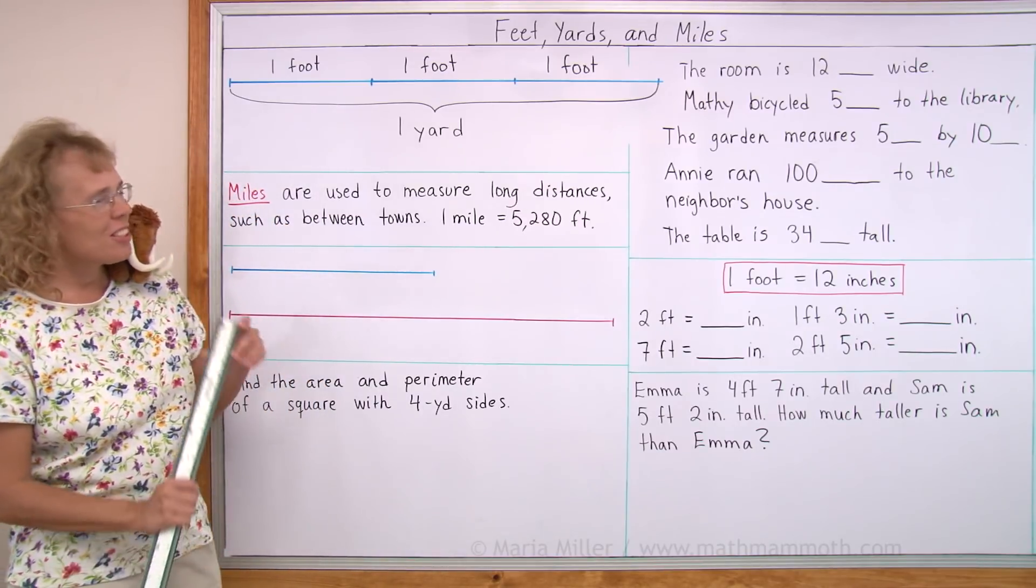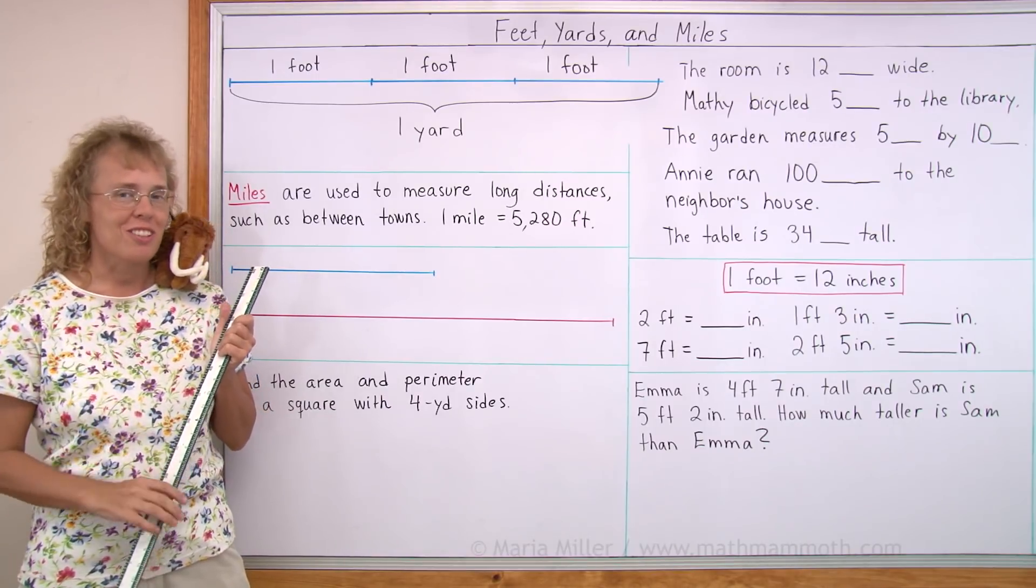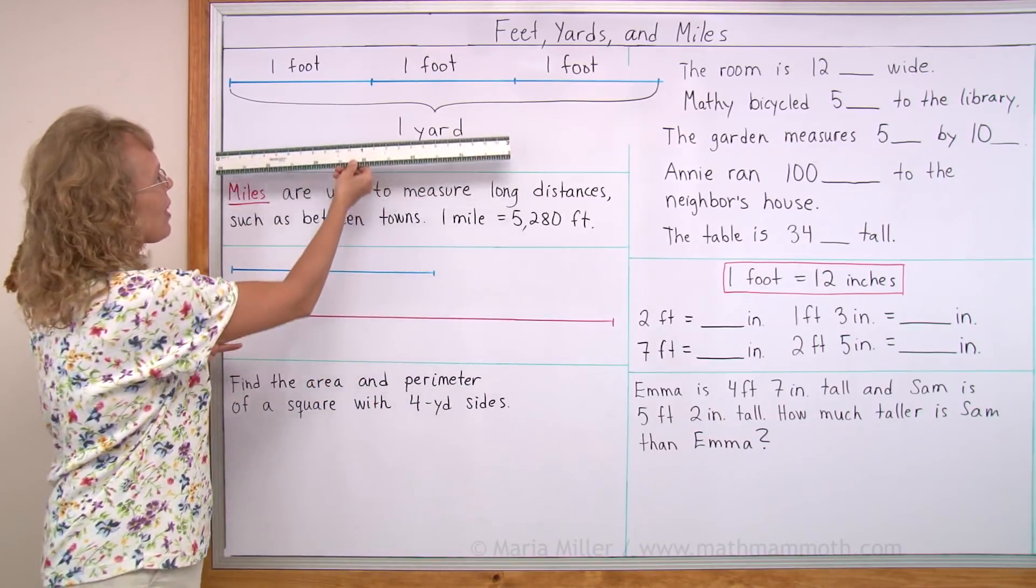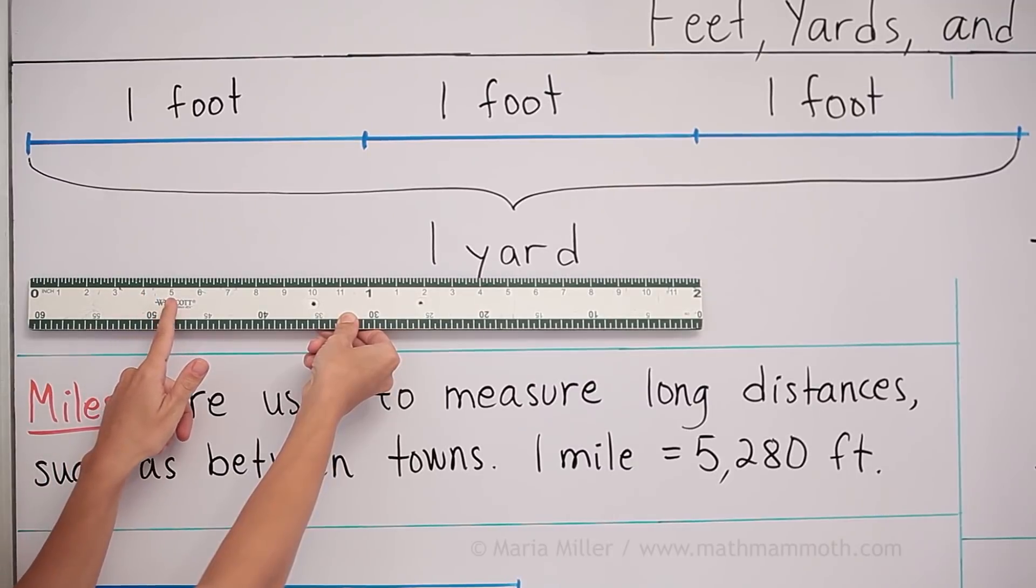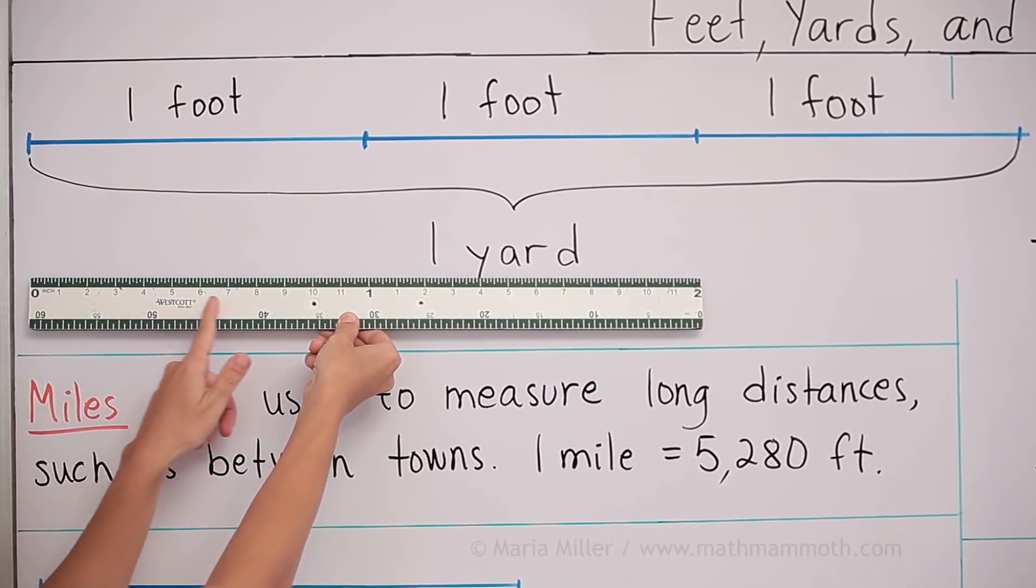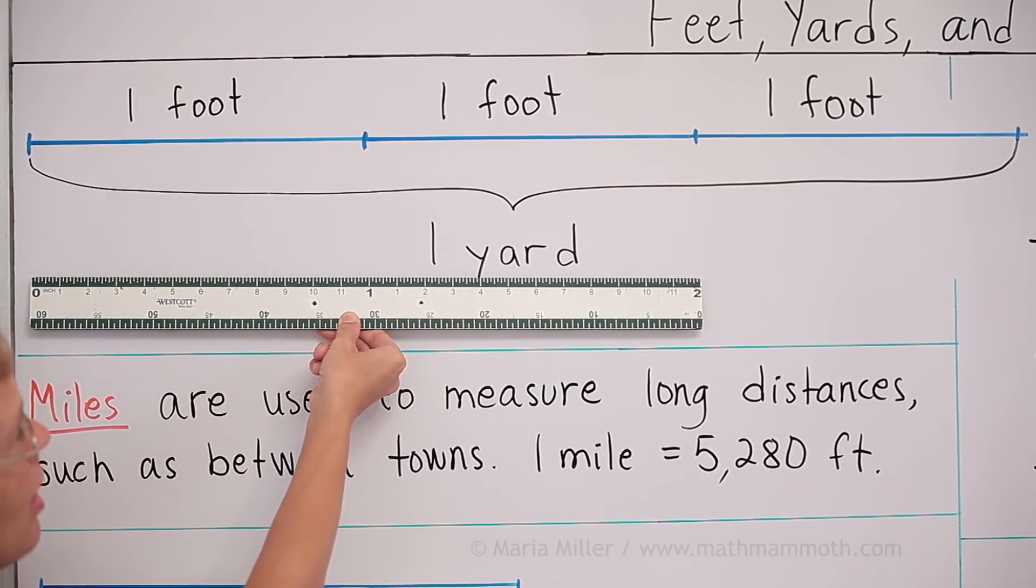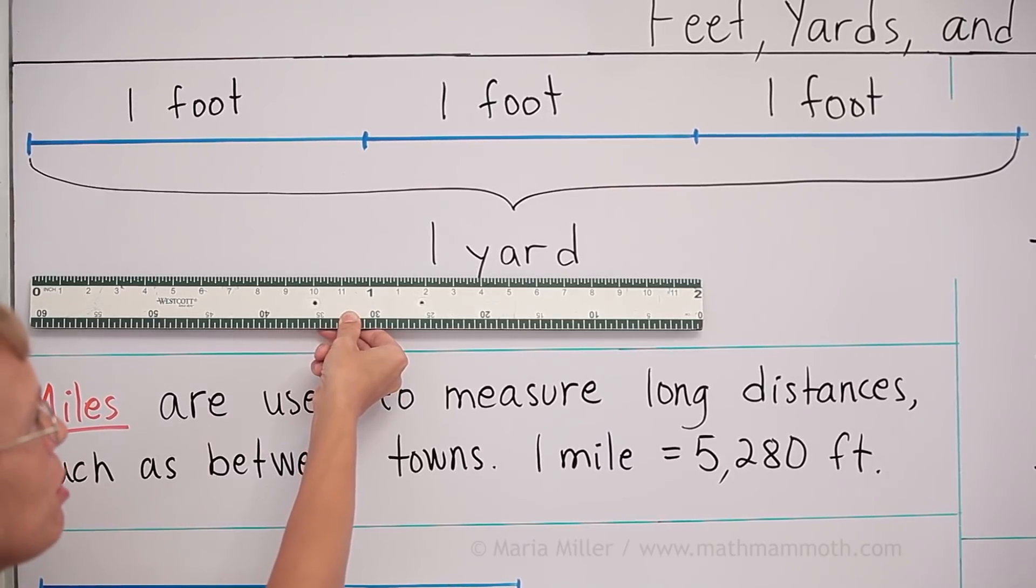First I want to remind you of something you already know about, which is inches on your ruler. I have a ruler here that also measures in inches. These numbers here, one, two, three, are for inches. When we get to 12 inches, we get one foot. That's why my ruler has a big number one there. So 12 inches makes one foot.